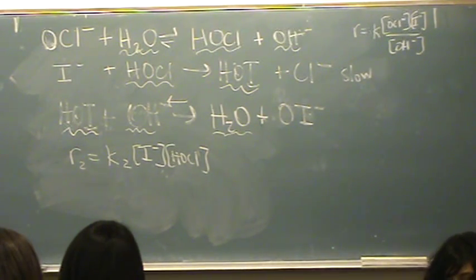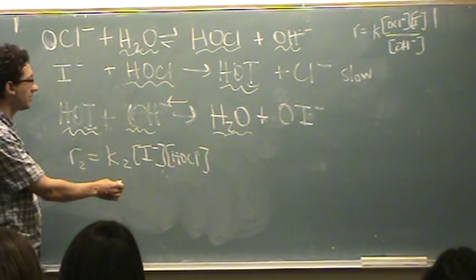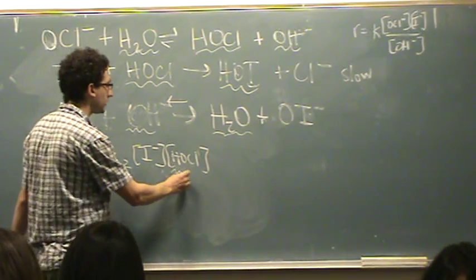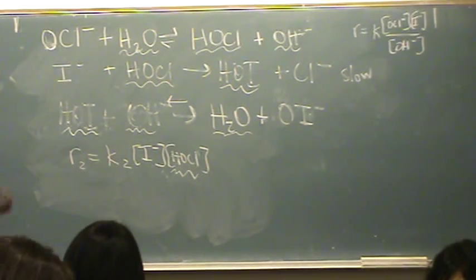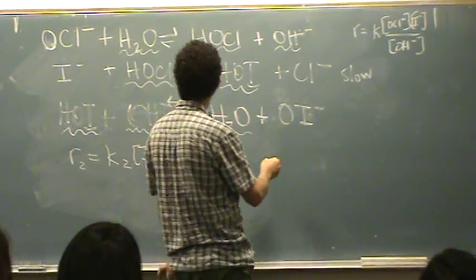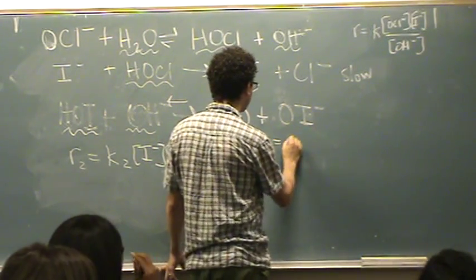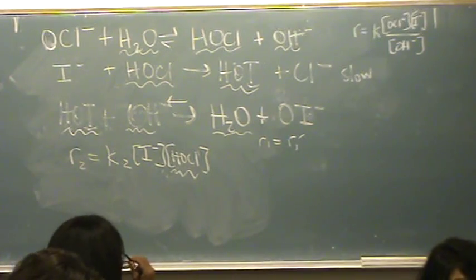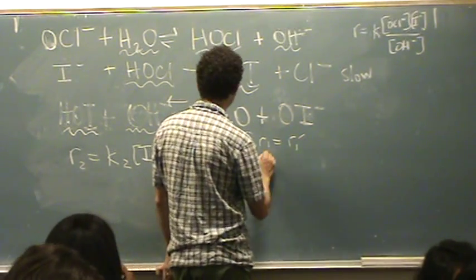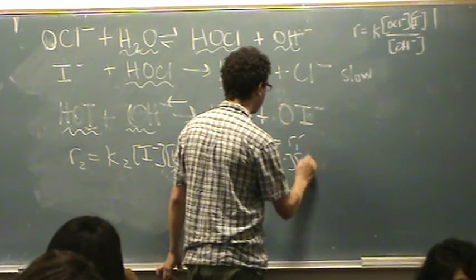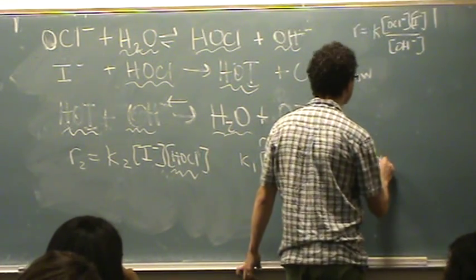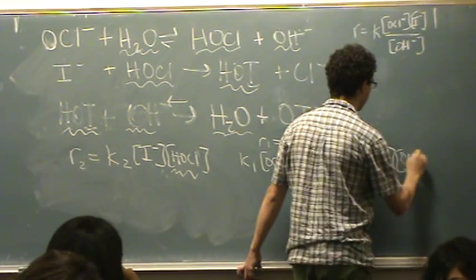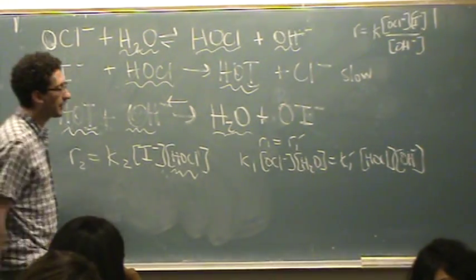Okay. So we've got that rate. We don't like, we like this I here. We don't like this H-O-C-L here, according to my answer. So, and it's an intermediate. So let's make a substitution for it. We can try the first reaction. See if it gets us some stuff that's helpful to get towards our answer. Rate one equals rate one reverse. So K-1 times O-C-L minus times water equals K-1 reverse H-O-C-L times O-H minus. I'm going to solve for H-O-C-L.